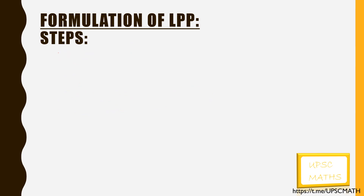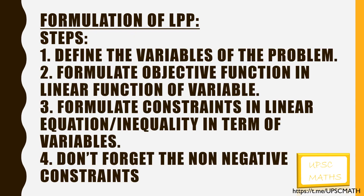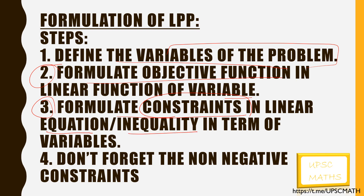Just like the graphical method, we will follow some standard steps to formulate a linear programming problem. Step 1 is to define the variables of the problem. Step 2: formulate the objective function as a linear function of the variables. Step 3: formulate the constraints as linear equations or inequalities in terms of the variables. And don't forget to write the non-negativity constraints.